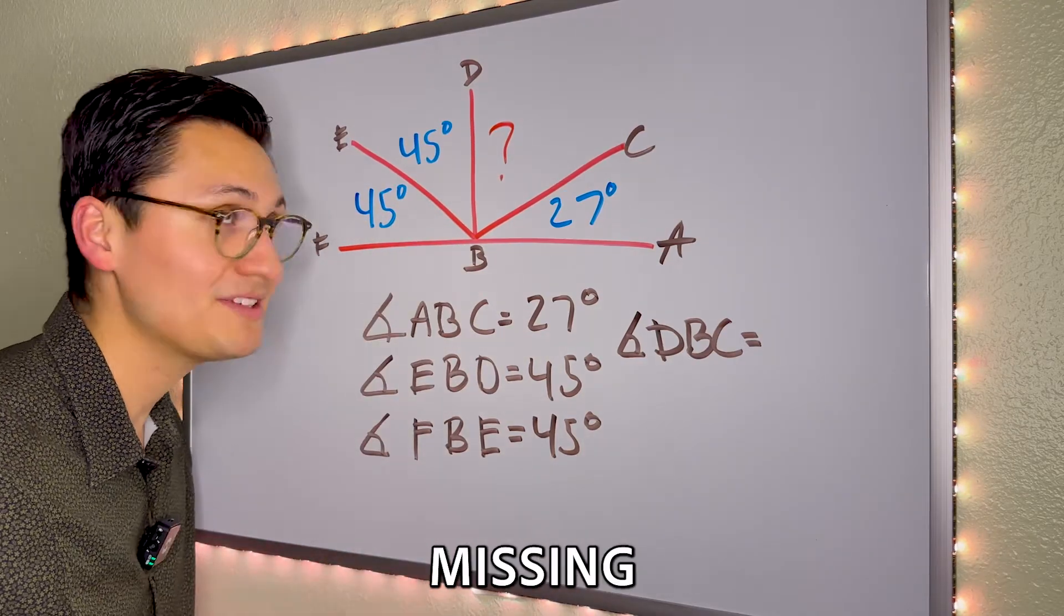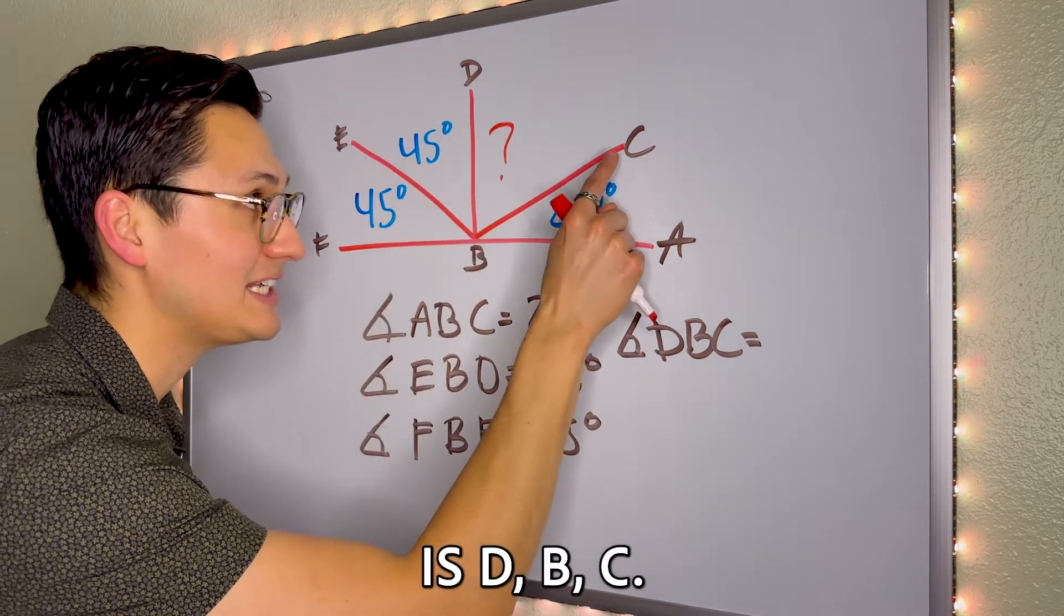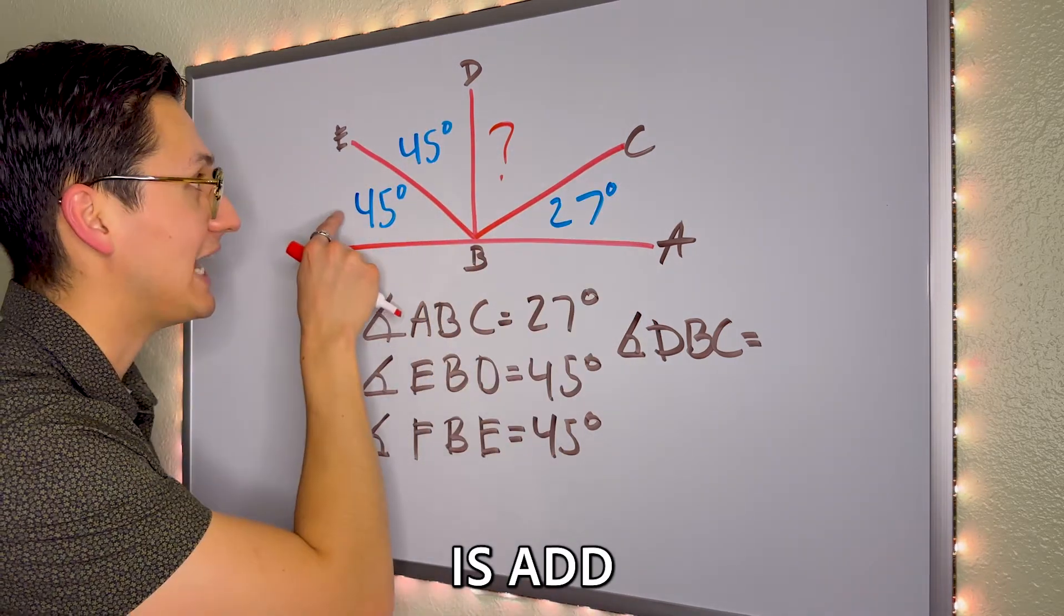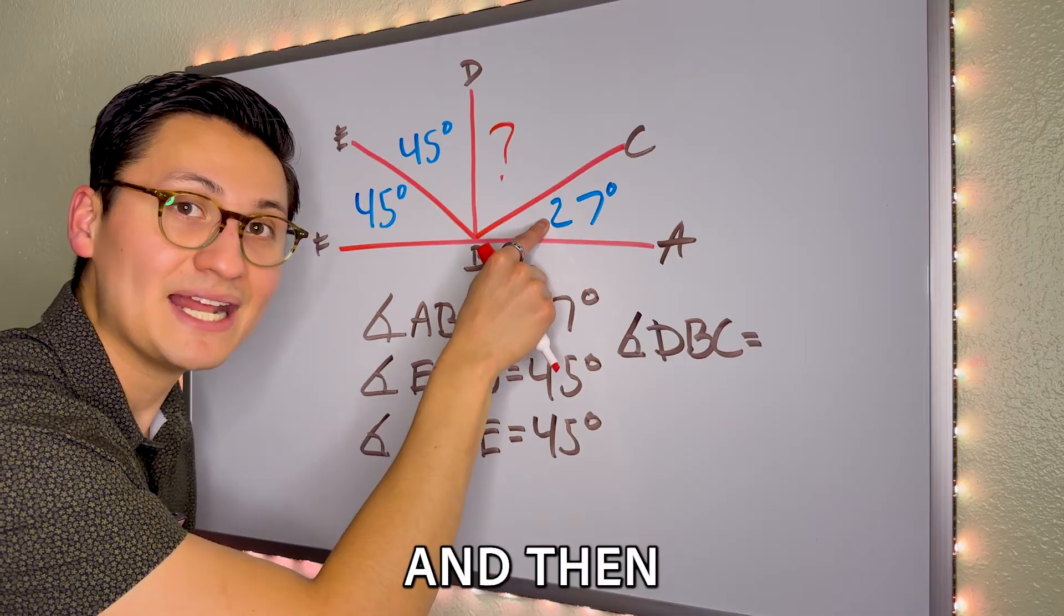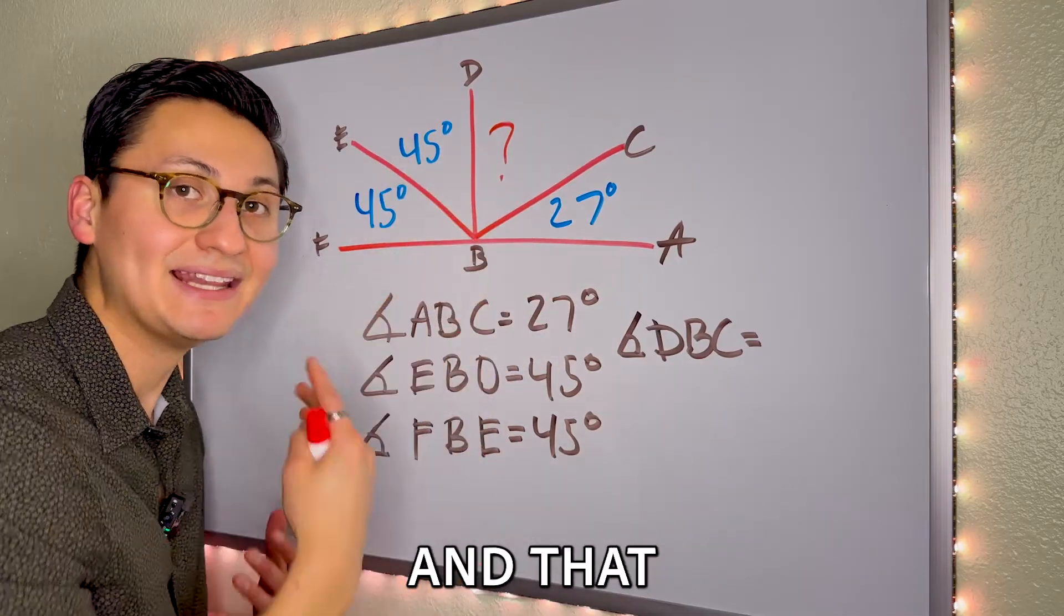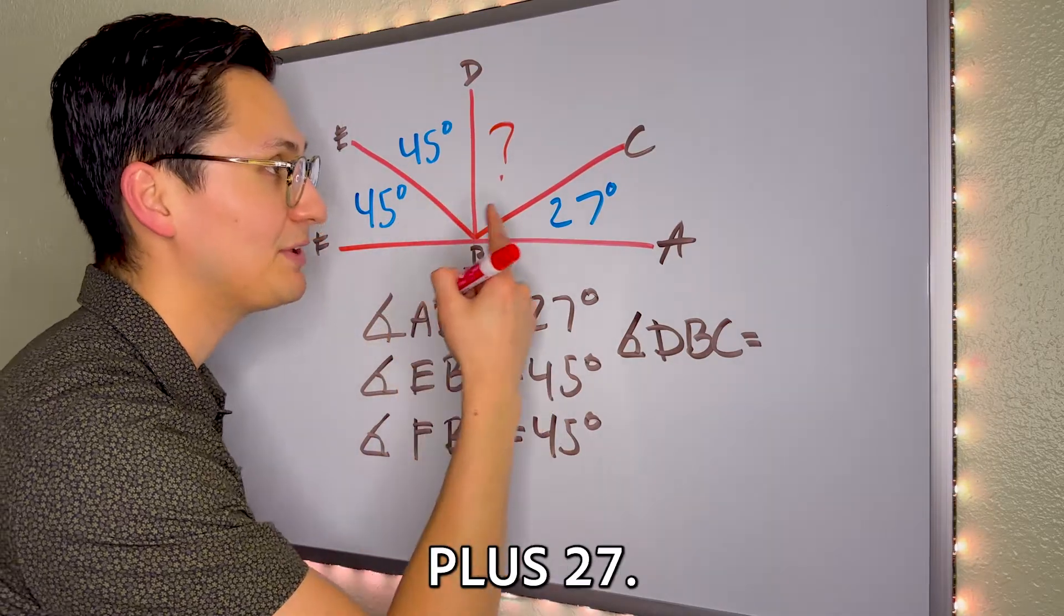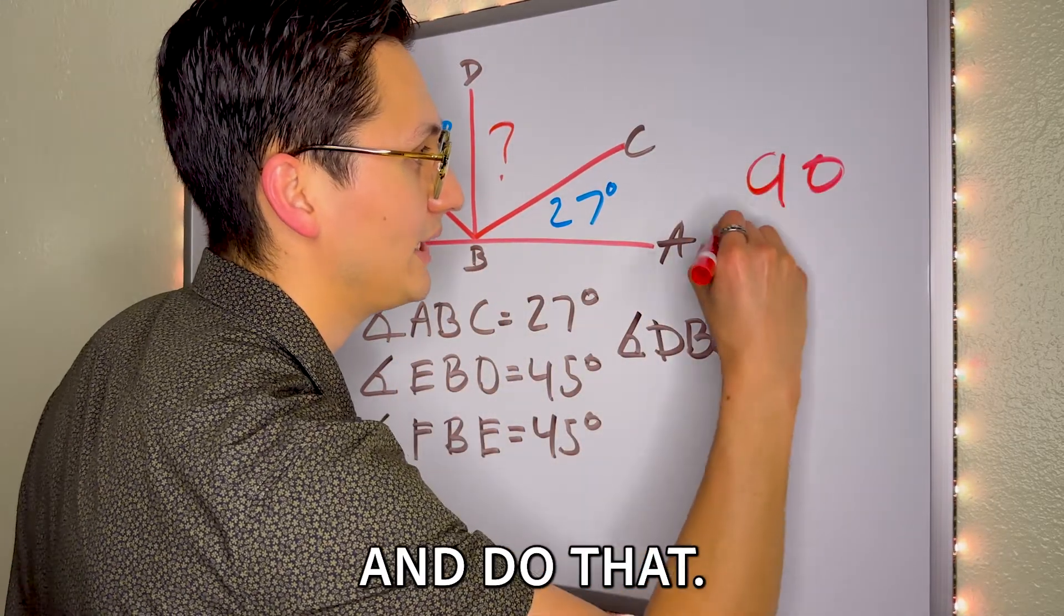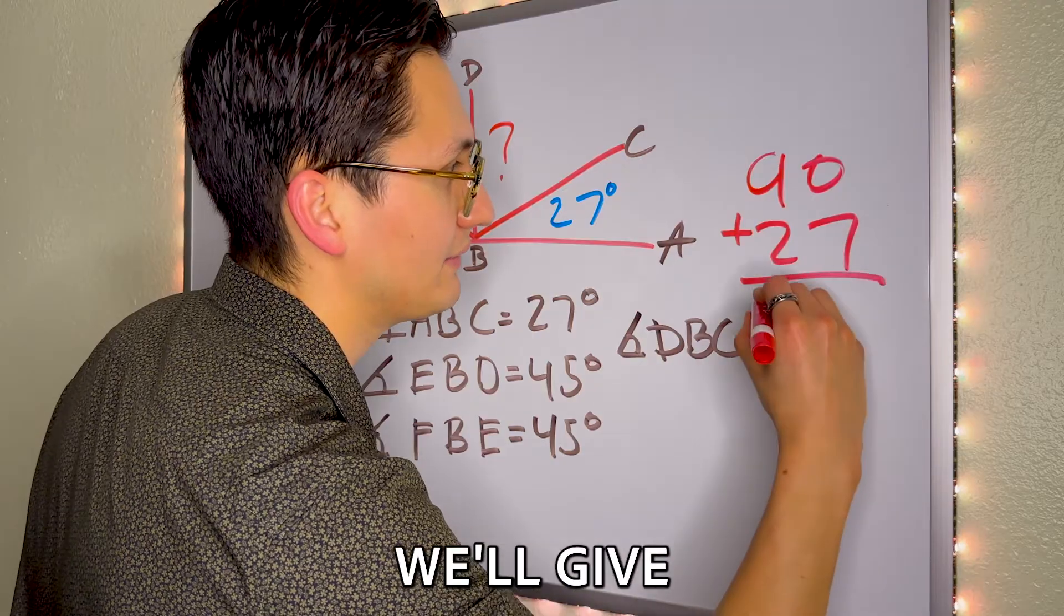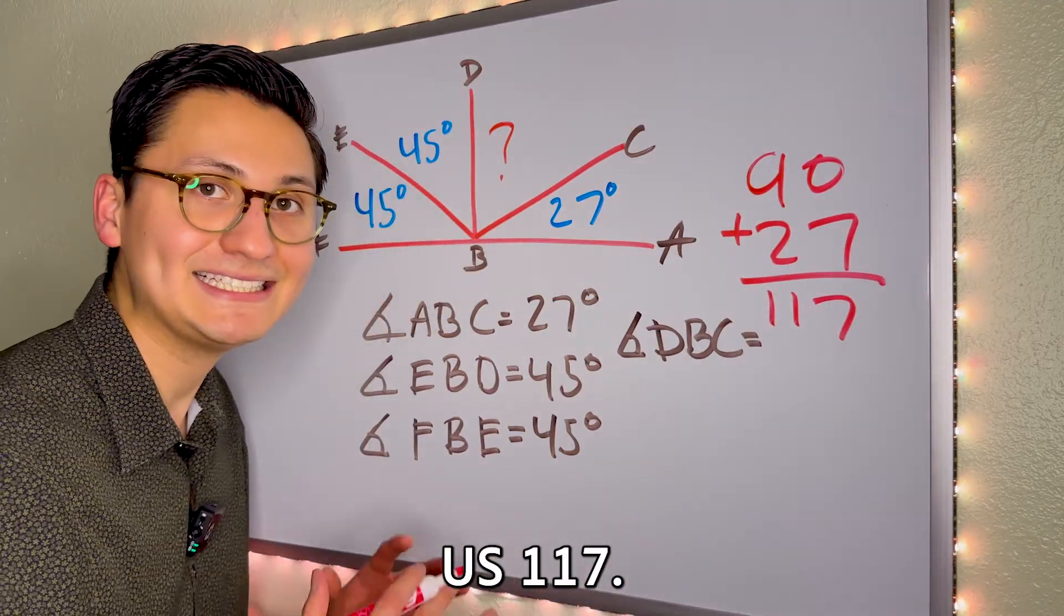And all we're missing is D, B, C. So what we have to do is add all three angles and then subtract it from 180, and that should give us the answer. 45 plus 45 is 90. 90 plus 27, let's go ahead and do that.